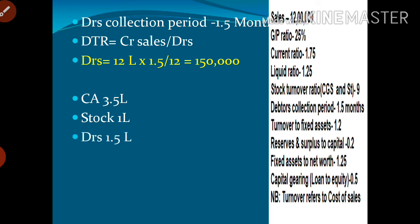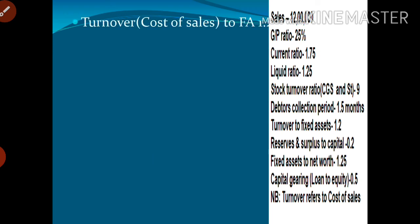Total current assets are 3.5 lakhs. Stock is 1 lakh and debtors is 1.5 lakhs, so the balance is 3.5 minus 1 minus 1.5, which equals 1 lakh. This balance is taken as other current assets. So the details of current assets are: stock, debtors, and other current assets of 1 lakh.